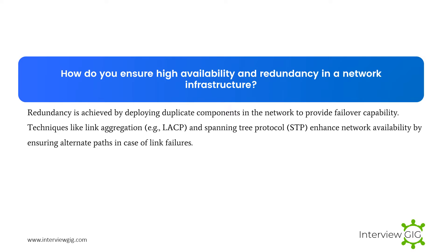How do you ensure high availability and redundancy in a network infrastructure? High availability and redundancy is achieved by deploying duplicate components in the network to provide failover capability. Techniques like link aggregation, e.g. LACP, and Spanning Tree Protocol (STP) enhance network availability by ensuring alternate paths in case of link failures.